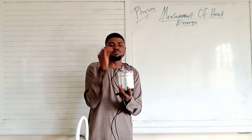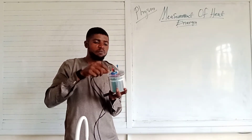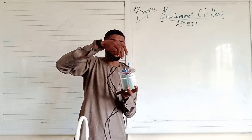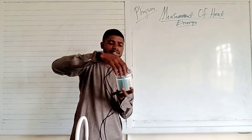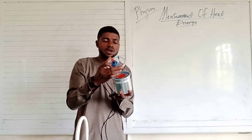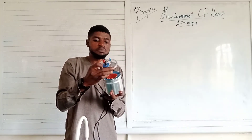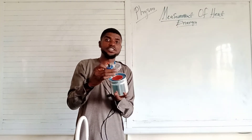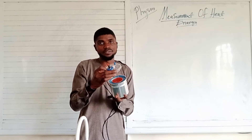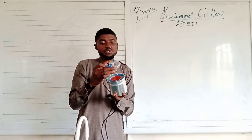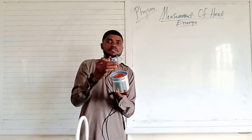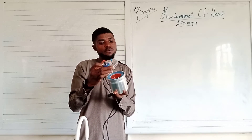Now I want to explain how it is built this way. The calorimeter is covered with a lid to prevent heat loss by evaporation and convection.